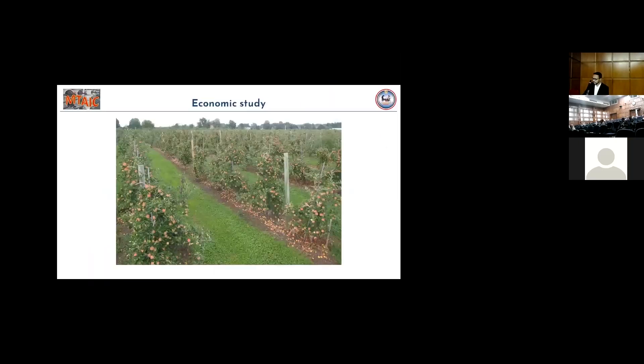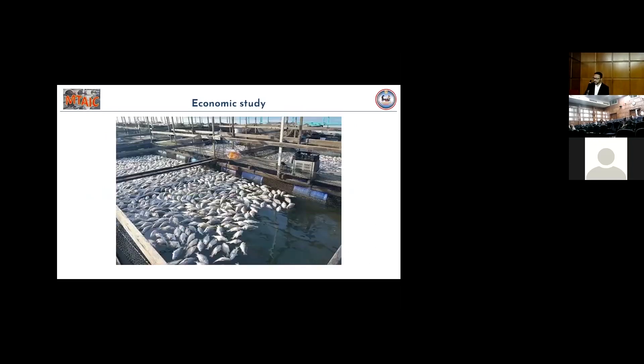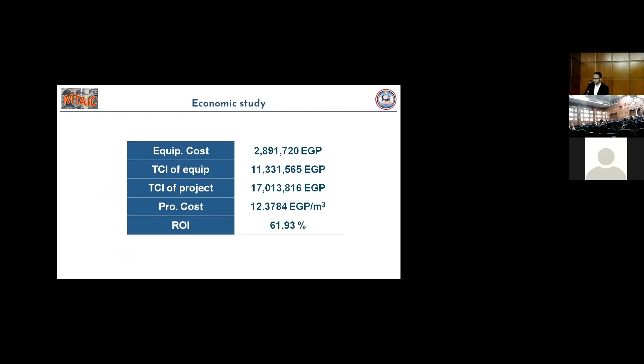The economic study: The profit is not gained by selling the water, but from using it in agriculture and from the ZLD area. The direct cost is almost 3 million Egyptian pounds. The total capital investment of the desalination plant is 11 million. The total capital investment of the whole project, including the land, the irrigation, and the ZLD is 17 million. The production cost for one cubic meter of produced water is 12 Egyptian pounds. The return on investment is almost 62 percent.